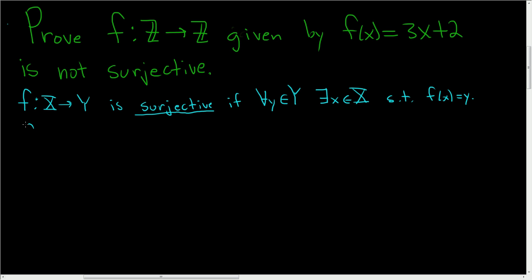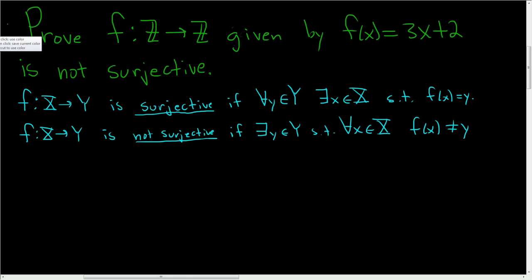What does it mean for a function to not be surjective? f from X to Y is not surjective if we take the negation of these quantifiers. Instead of for all y in Y, there exists a y in Y such that for all x in X, we have f(x) not equal to y. That's what it means for a function not to be surjective.